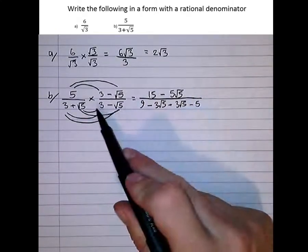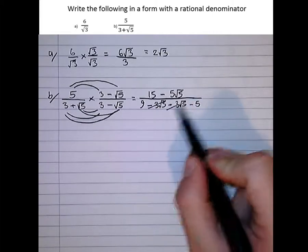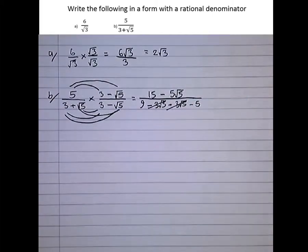And notice, because we've multiplied a surd by its conjugate, the middle two terms cancel. It's the difference of two squares almost.